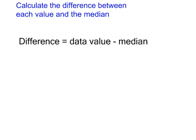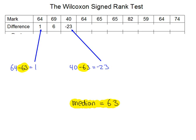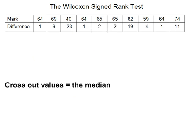Calculate the difference between each value and the median. So take the data value and subtract the median from the data value. The median is 63. So take each mark and subtract 63. So for the first one there, you have a mark of 64. Subtract 63, the median, that gives you a difference of 1. Do that for all of the others. That will give you all of these differences.